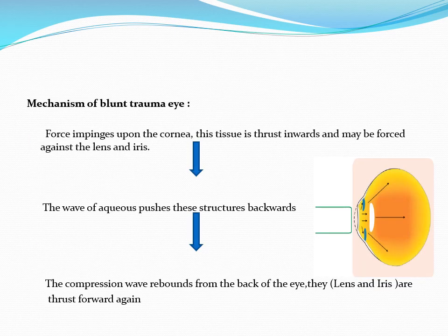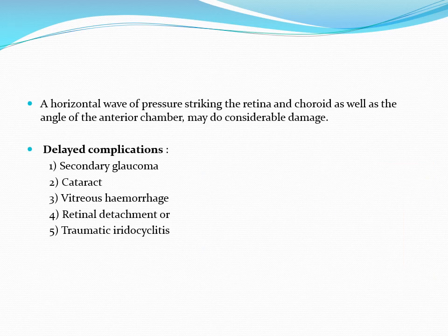The mechanism of blunt trauma to the eye: force impinges on the cornea, which is thrust inward and may be forced against the lens and iris. The wave of aqueous pushes these structures backwards. The compression wave rebounds from the back of the eye and the lens and iris are thrust forward again. This results in a horizontal wave of pressure striking the retina and choroid as well as the angle of the anterior chamber, doing considerable damage.